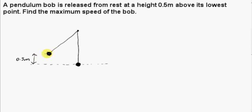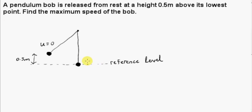Finally, we look at a pendulum bob that is released at a height of 0.5 meters above a reference level. It's released from rest, so its initial speed u is 0. The reference level runs through the center of the bob when the bob is at its lowest point in the trajectory. We want to find the maximum speed of the bob. The maximum speed occurs when the bob is at its lowest point, which will become clear from conservation of energy.